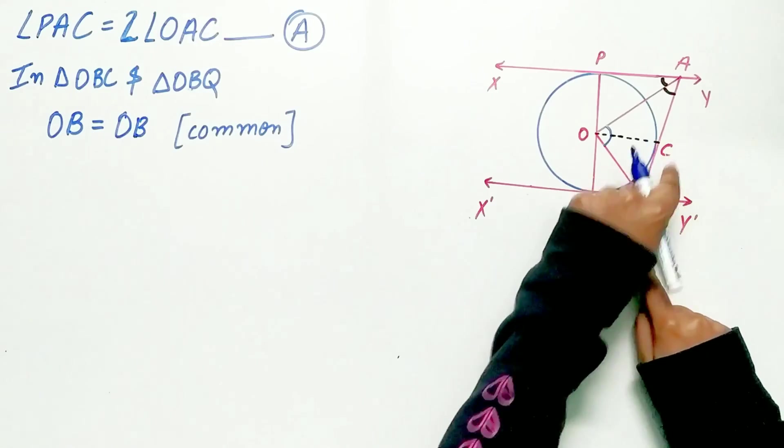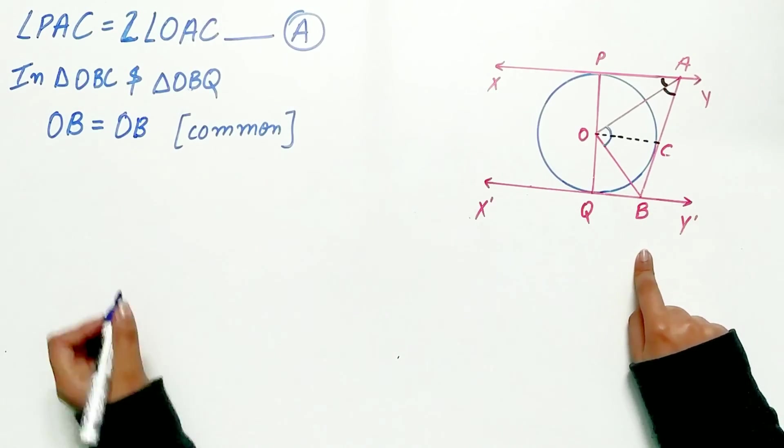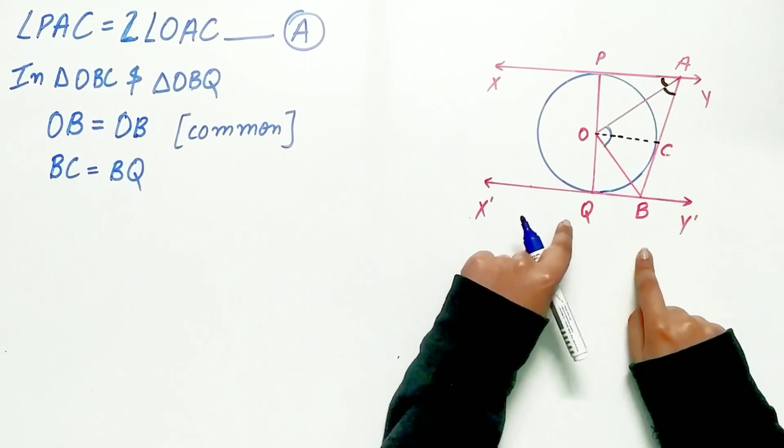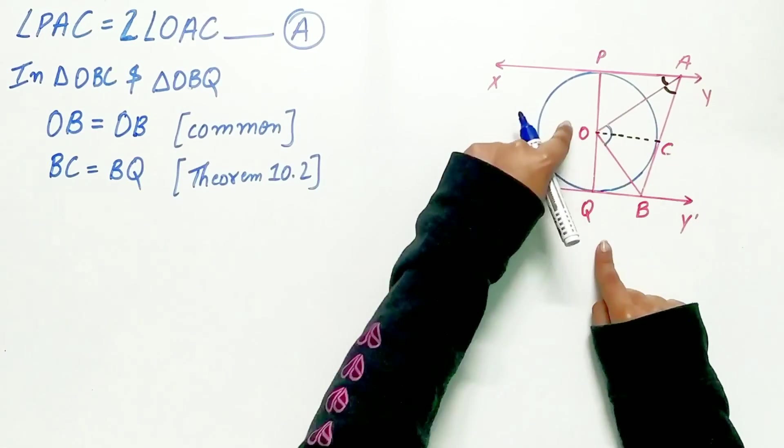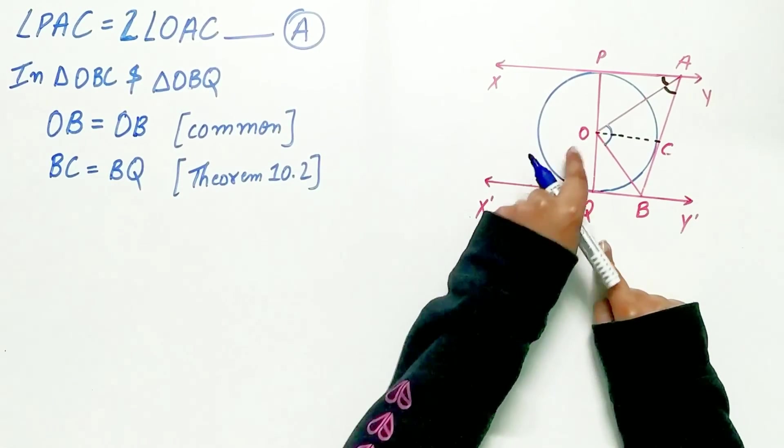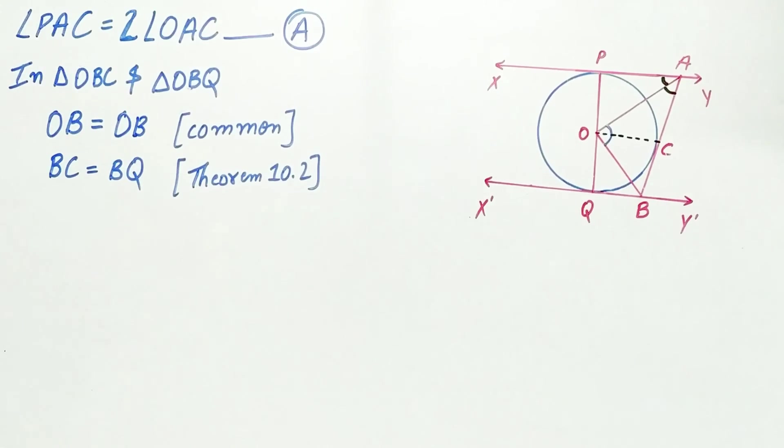Hence, they are equal in length. BC is equal to BQ. OC and OQ are radii of the circle. Hence, they are also equal.